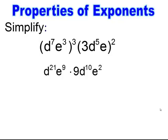Now I have the multiplication property, where I'm adding exponents for like bases. Remember, the numerical part needs to go up front, so I end up getting 9, d to the 31st, e to the 11th.